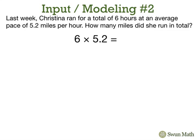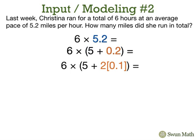We're multiplying 6 times 5.2. We'll begin by decomposing 5.2. That becomes 5 plus 2 tenths. And now we'll decompose 2 tenths. It becomes 2 times 1 tenth.